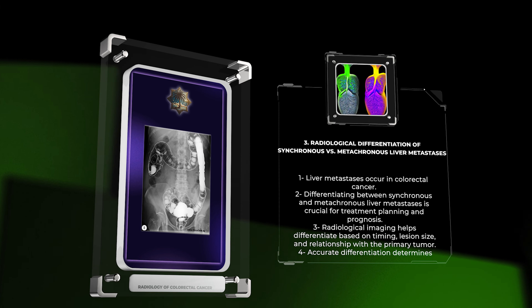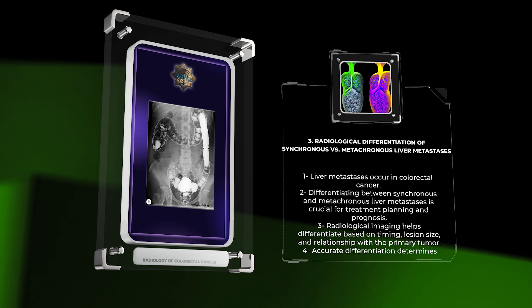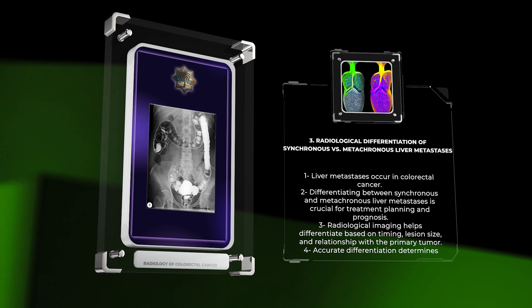Liver metastases are a common occurrence in patients with colorectal cancer. Distinguishing between synchronous and metachronous liver metastases is crucial for treatment planning and prognosis. Radiological imaging such as contrast-enhanced CT and MRI can help differentiate between these two entities based on imaging characteristics including timing of appearance, lesion size, and relationship with the primary tumor, playing a pivotal role in determining the appropriate management strategy.